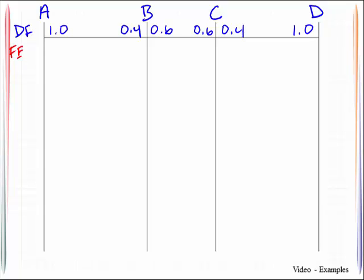Next thing to place in the table are the fixed end moments. Those come from this. And so we can go ahead and write those in. Negative 112.5.